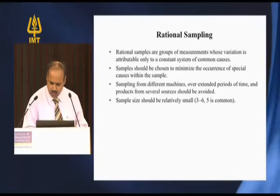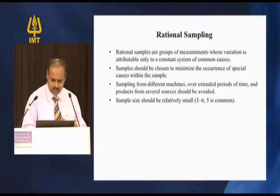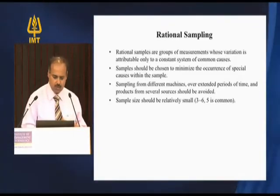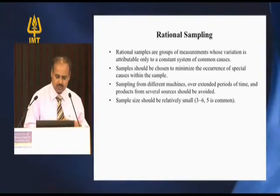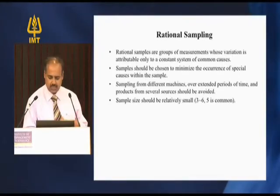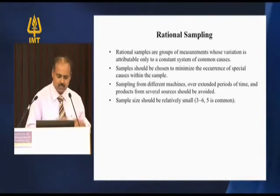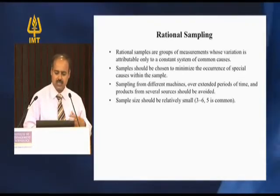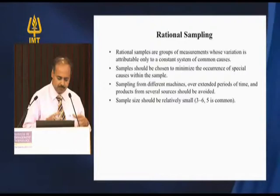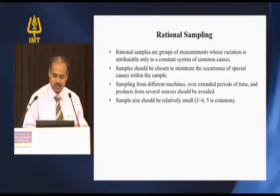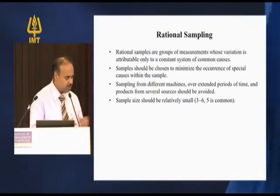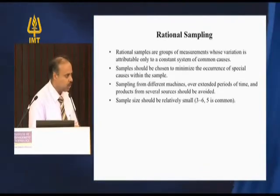Rational samples are a group of measures whose variation is attributed only to the constant system of common causes. Samples should be chosen to minimize the occurrence of special causes within the sample. Sampling from different machines over extended periods or products from several sources should be avoided. Sample size should be relatively small — three to six.